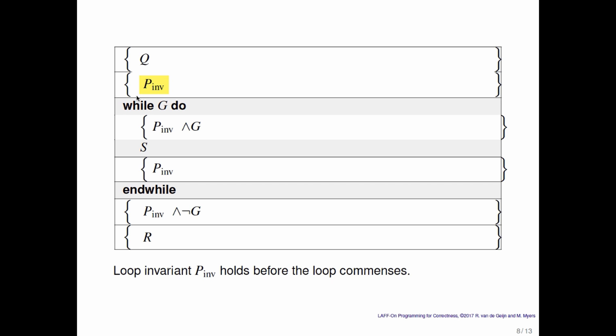We have this predicate called the loop invariant, which we would like to be true at various points in this while loop. If we can show that q implies the loop invariant, then we know that the loop invariant is true before the loop commences. That is like the base case in mathematical induction.